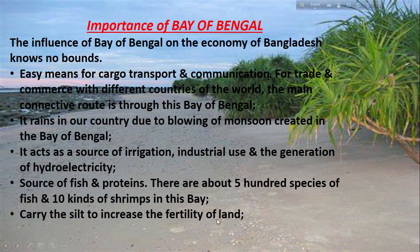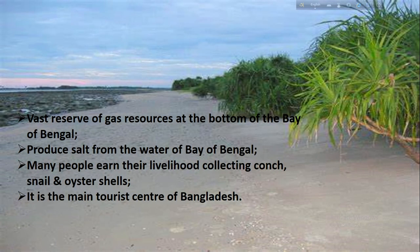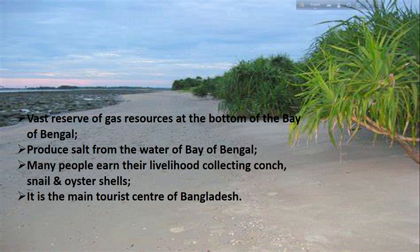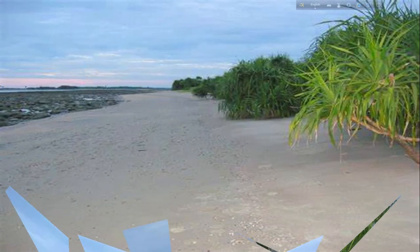The rivers carry silt to increase the fertility of the land. There is also a vast reserve of gas resources at the bottom of the Bay of Bengal. The coastal people produce salt from the water of the Bay of Bengal, which satisfies almost the entire salt demand of the country. Many people also earn their livelihood by collecting conch, snails and shells. Notable fish from the Bay include Rupchanda, Hilsha, Churi and Loita, and these are exported to foreign countries. Cox's Bazar on the coast of the Bay of Bengal is the main tourist center of Bangladesh. Here today we end our class. Thank you all.